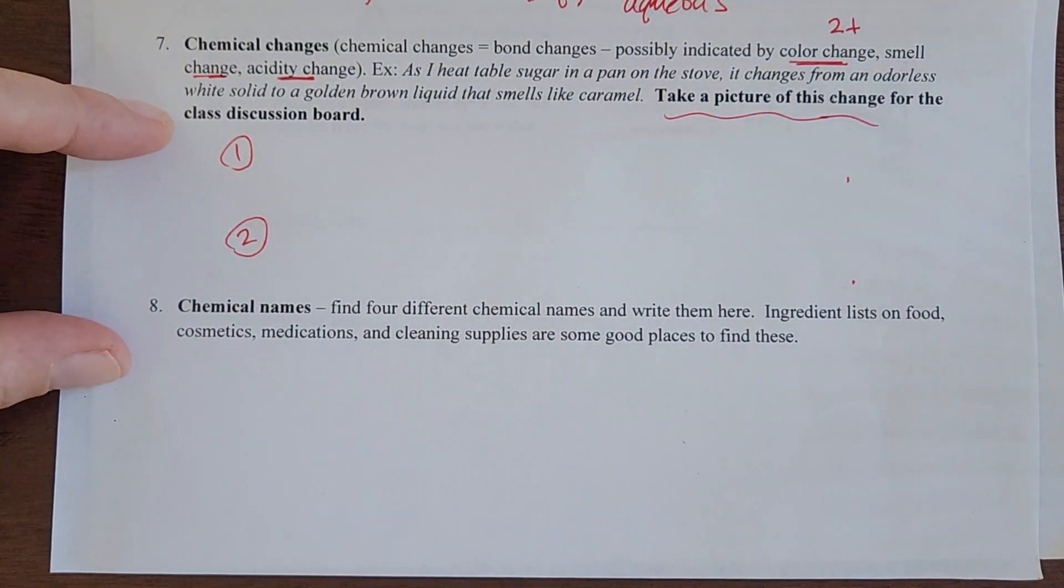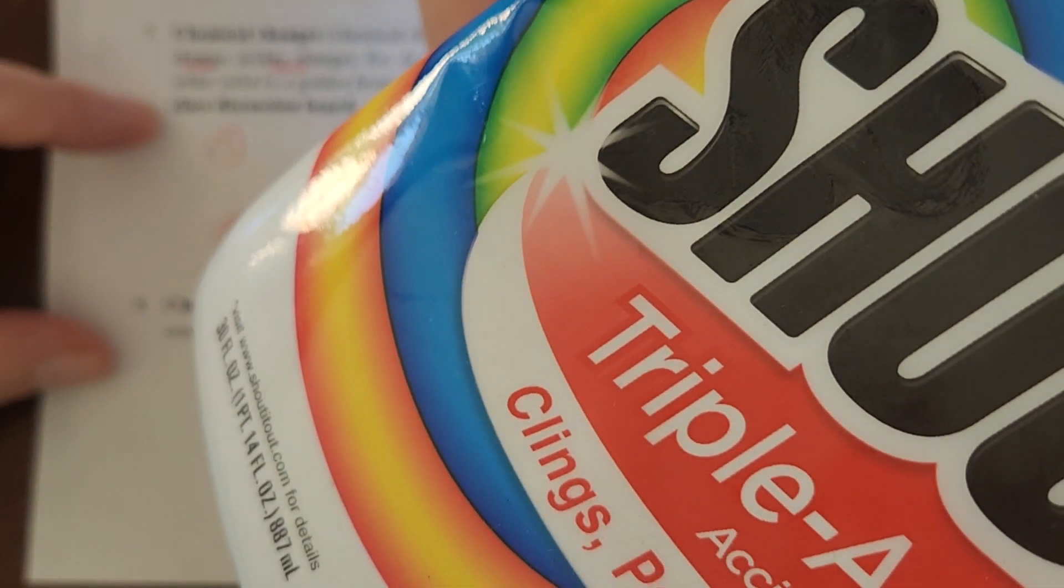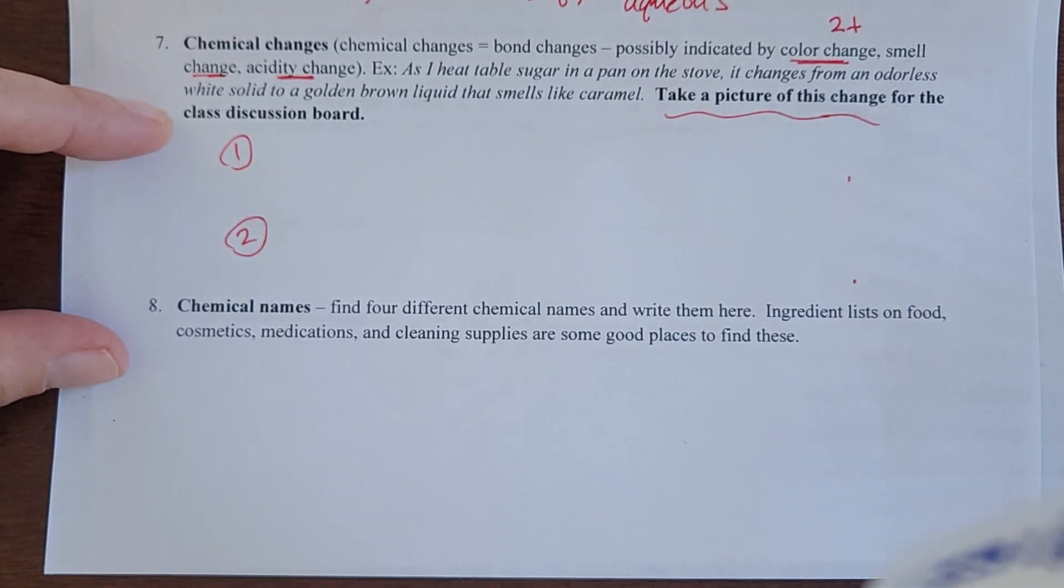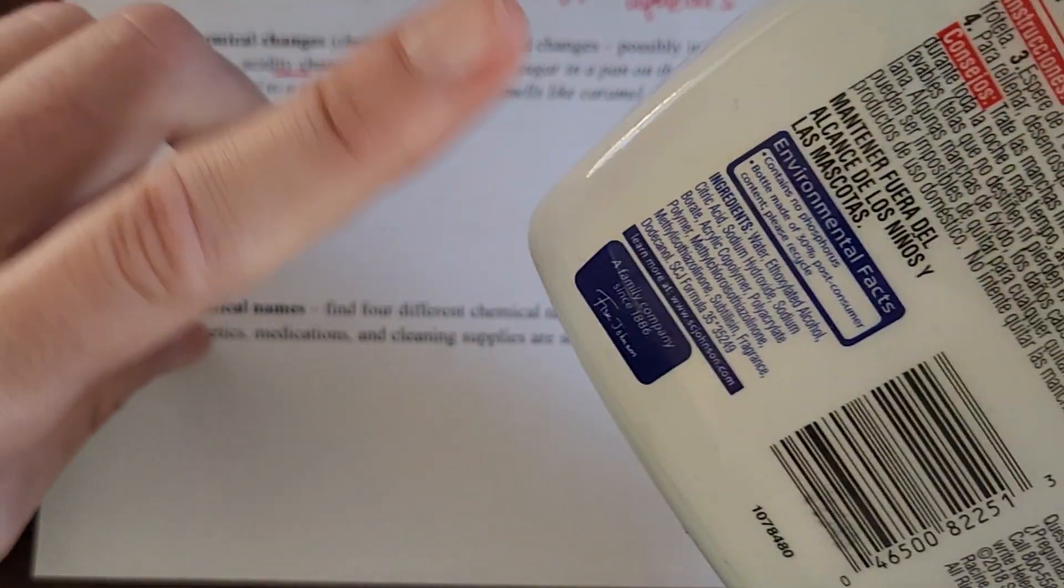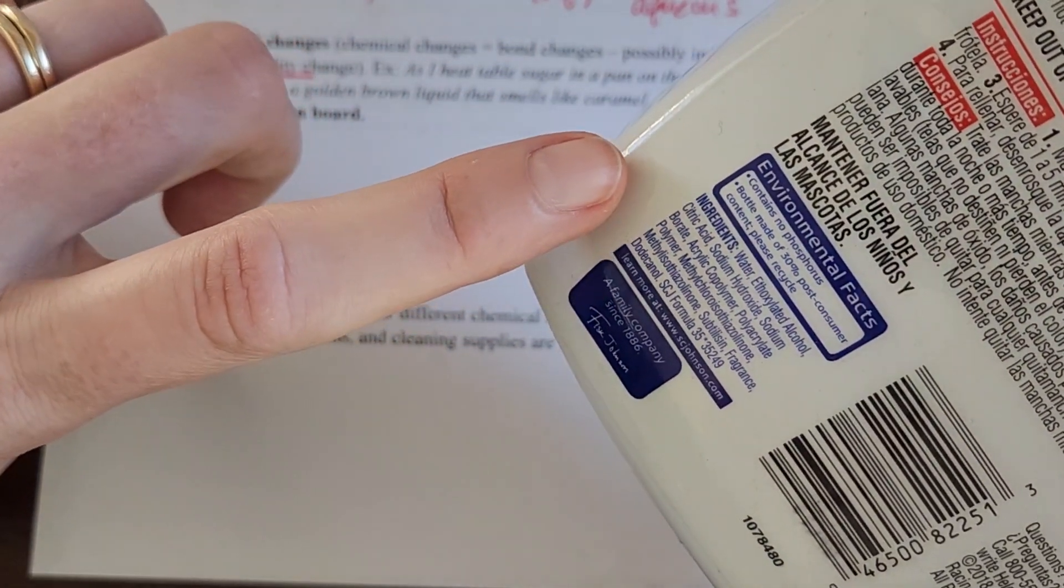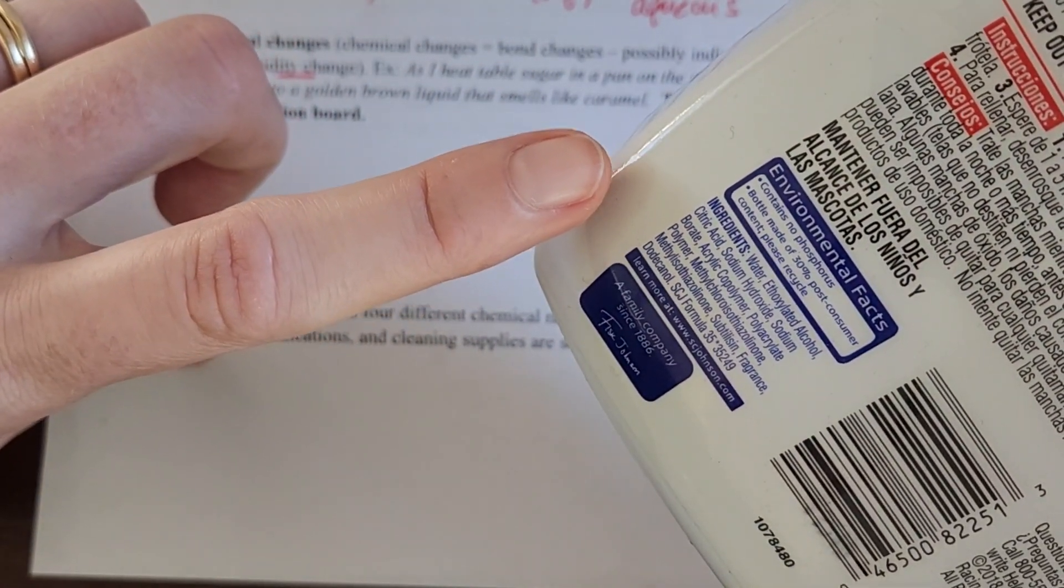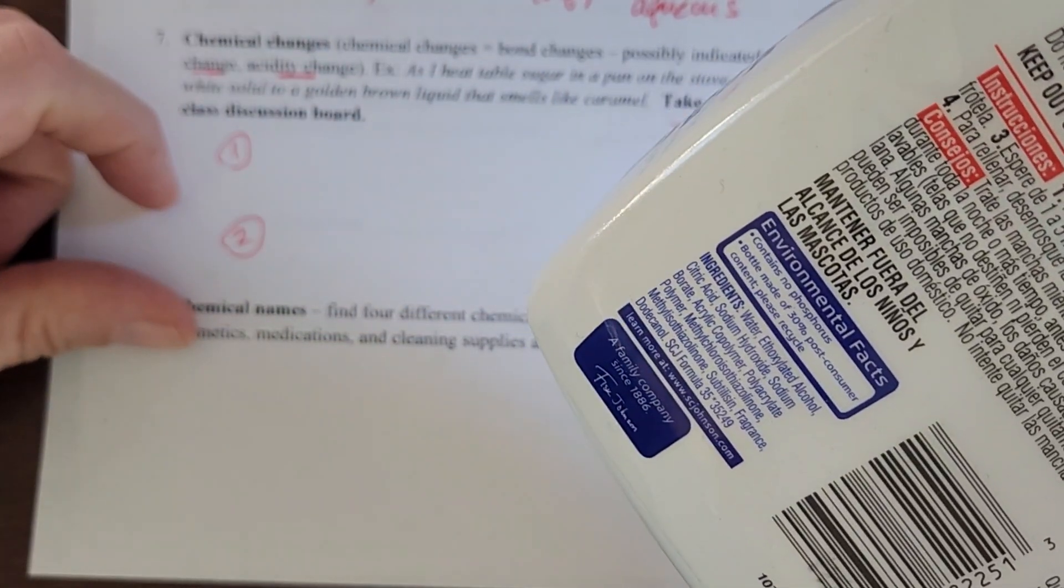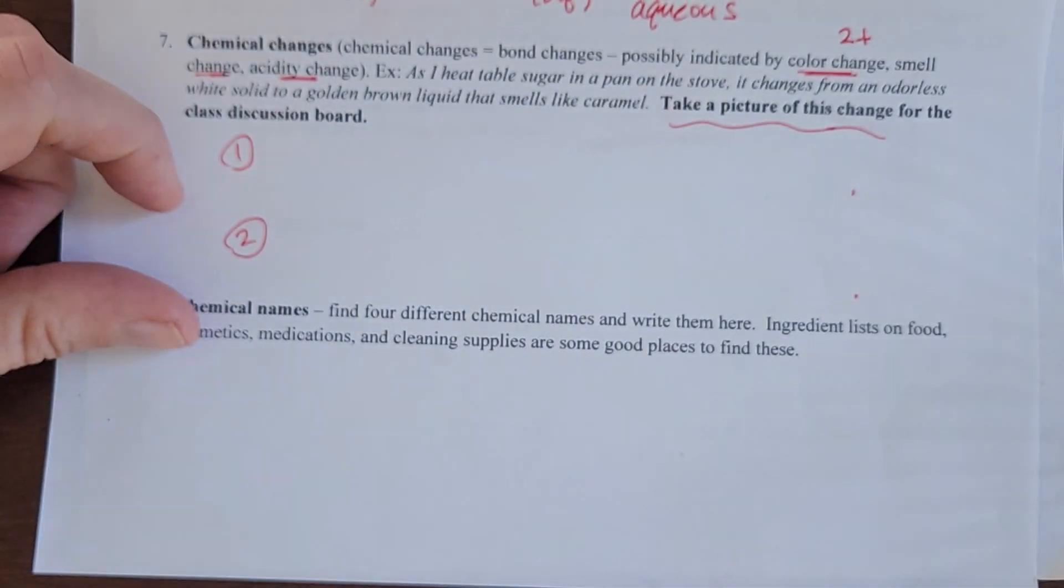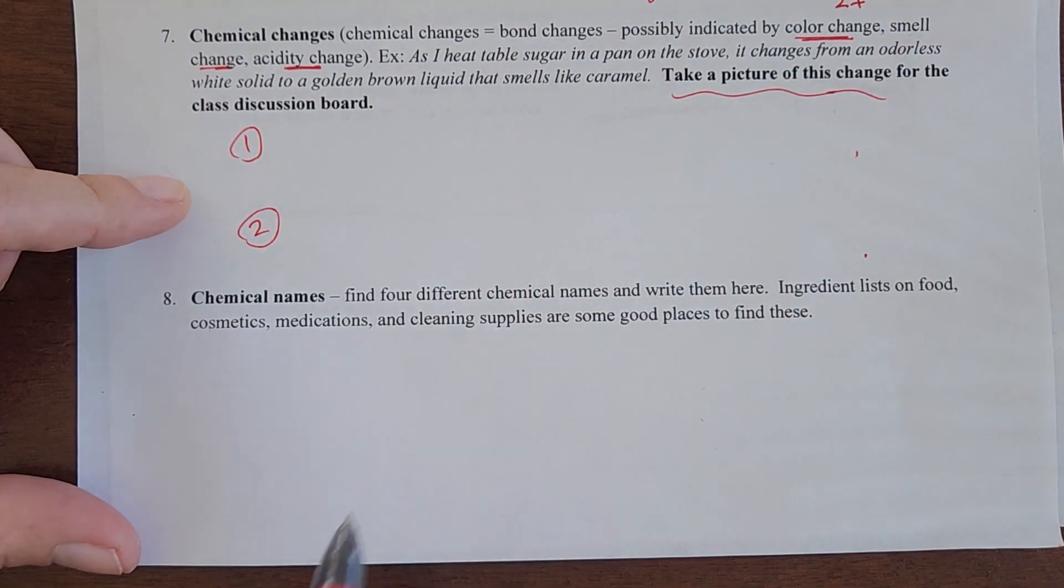Another place to find some interesting names sometimes is house cleaners. I've got some spot remover here. If I'm looking for chemicals, I'm looking down here at the ingredient list. Ethyl ethoxylated alcohol, citric acid, sodium hydroxide. Those names are going to start to mean a little bit more to us this semester. Find four different chemical names, and that wraps up this week's lab.